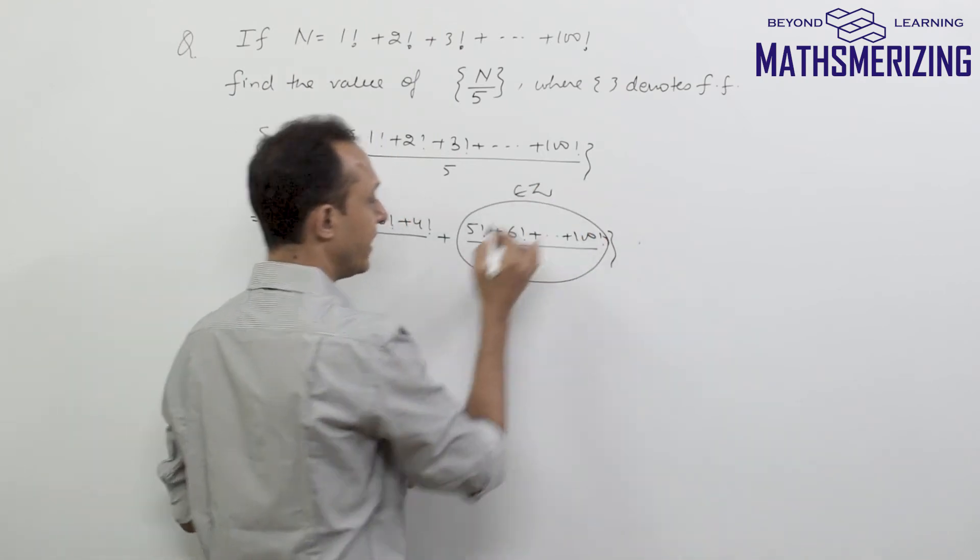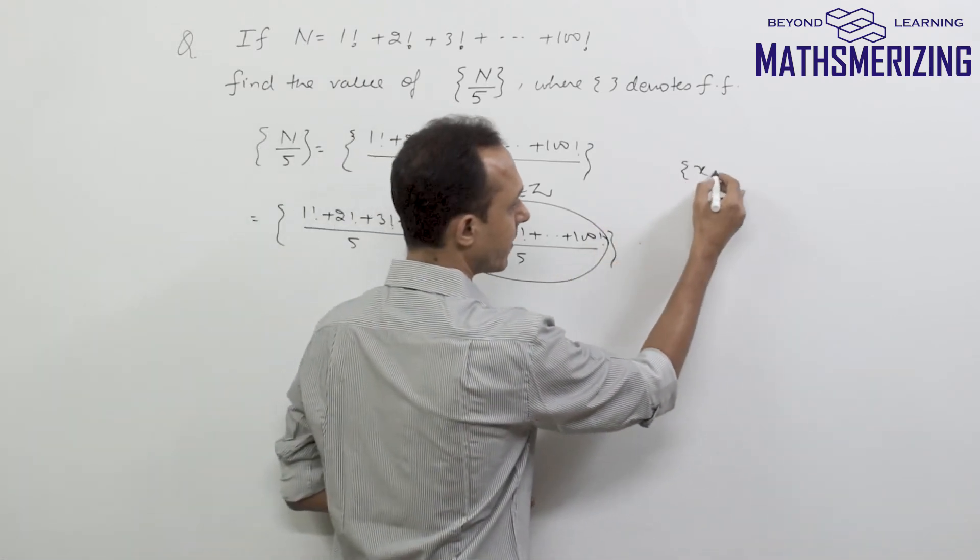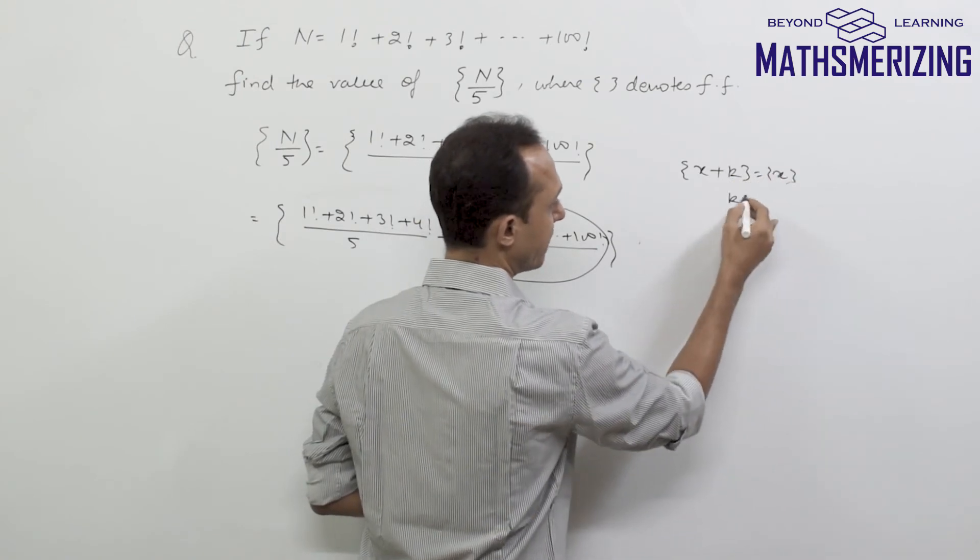This is an integer, and we know that fractional part of x plus k, where k is an integer, is simply fractional part of x.